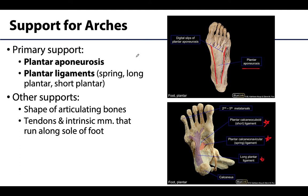These are the main components of primary support, but there are other factors that support the arches, including simply the shape of the articulating bones — they fit in such a way that facilitates these arches — as well as long tendons crossing along the sole of the foot and intrinsic muscles located entirely in the sole of the foot. These all play a role in maintenance of the arches.